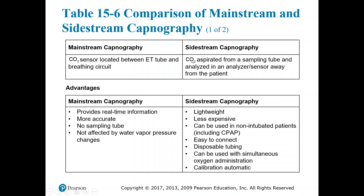With sidestream, it takes a sample of the gas through a sampling tube and analyzes it in an analyzer away from the patient, so there's some dead space in that line. Sidestream capnography is generally lightweight and usually combined with another monitor you're carrying anyway. They're less expensive and can be used in non-intubated patients, including with CPAP, by use of either the nasal cannula or the ET tube adapter. It's easy to connect — just a simple slip-in and twist into your monitor. The tubing is disposable, can be used with simultaneous oxygen administration, and the calibration is automatic.